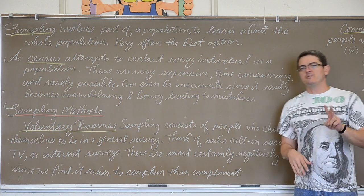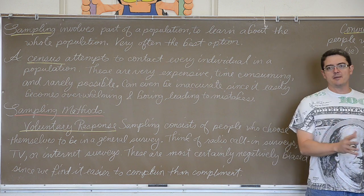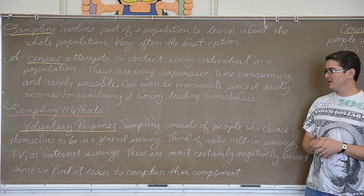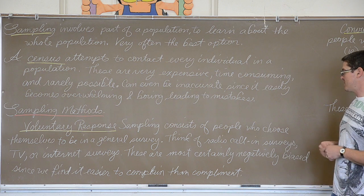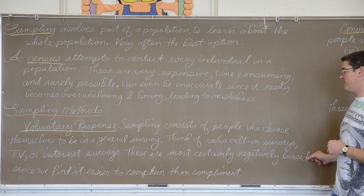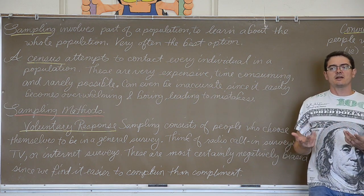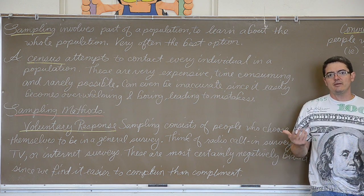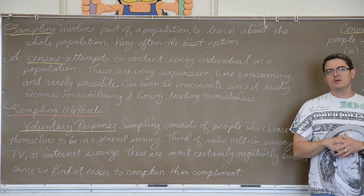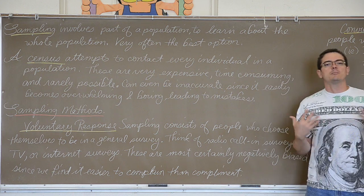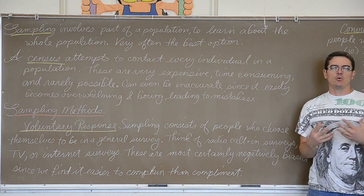Now we are going to talk about two sampling methods — today's video is just about sampling. The first is voluntary response sampling, which consists of people who choose themselves to be in the survey. Think of radio call-in surveys or TV and internet surveys. These are most certainly negatively biased, since we find it easier to complain than to compliment — even about ourselves. If I ask students what they like or dislike about themselves with just a minute to answer, the list of complaints would grow very quickly compared to what they like. When we are unhappy we voice out, and not often enough do we compliment or point out what is good.